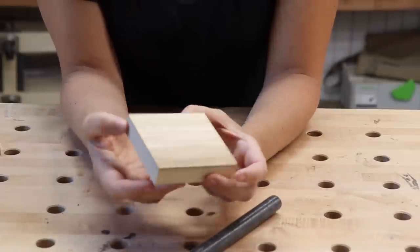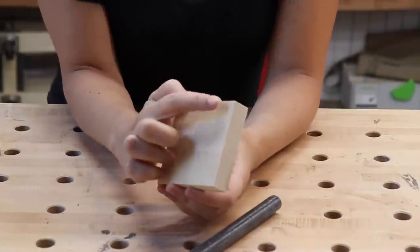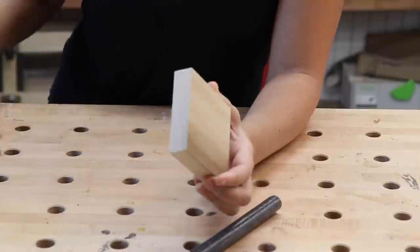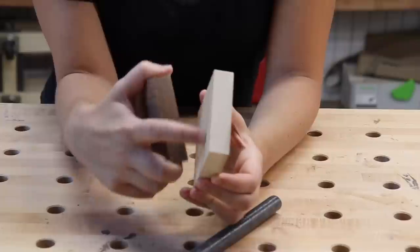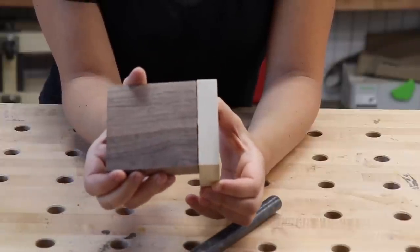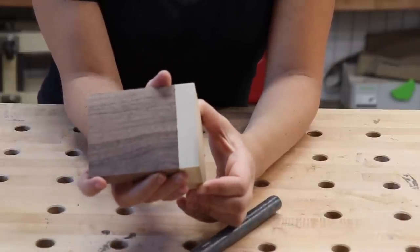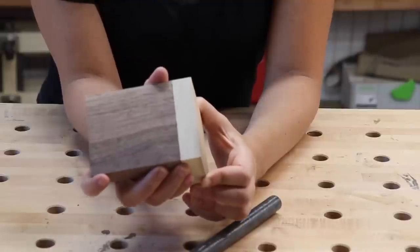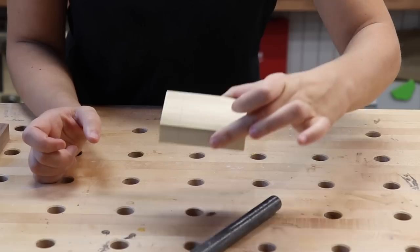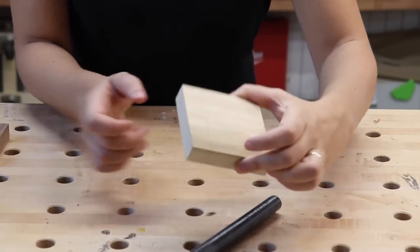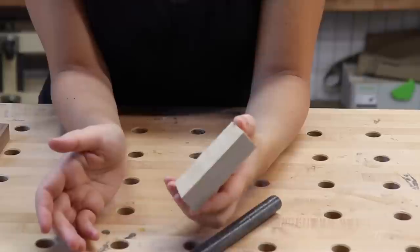The first tip from Jonathan's video is to create a rabbit on the inside face of the tails board. That way when you're lining up for your pins, there's a little lip that the piece of wood will register against, and it will be easier to mark out for your pins. He did this on the table saw by taking multiple passes with a single blade or a dado blade and then cleaned it up with a shoulder plane.